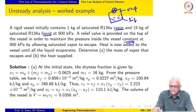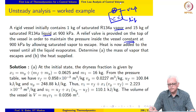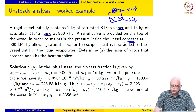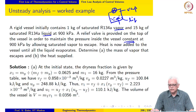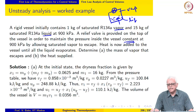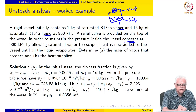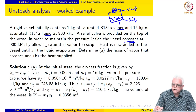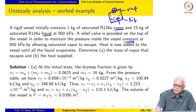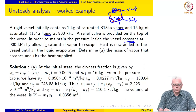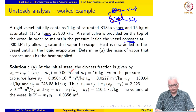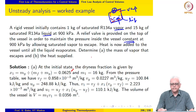The valve maintains the pressure inside the vessel constant by allowing saturated vapor to escape. We heat the contents of the vessel until all the liquid evaporates. We are asked to calculate the mass of vapor that escapes and the heat that is supplied. Using the given information, the dryness fraction at the initial state may be evaluated as 0.0625, meaning it is practically all liquid, and the total mass is 16 kg — 1 kg of vapor plus 15 kg of liquid.